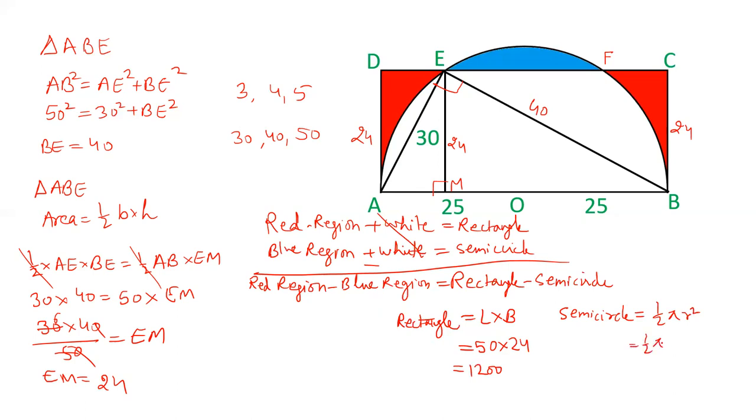½, let's keep π as π, then the radius is 25, so that will be ½π × 25², which is ½π × 625. So that area is 625π/2. And therefore the area of red region minus blue region is equal to rectangle minus semicircle, and that will be equal to 1200 - 625π/2. This is the required answer. 1200 - 625π/2 is the difference of these two regions.